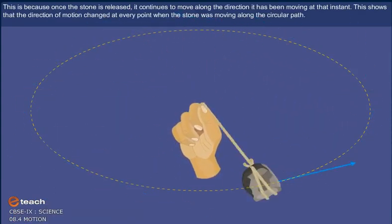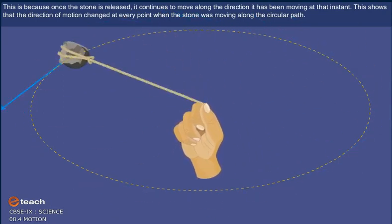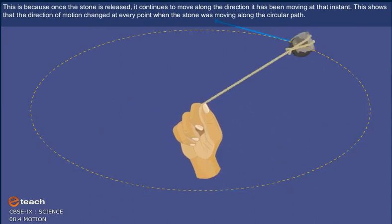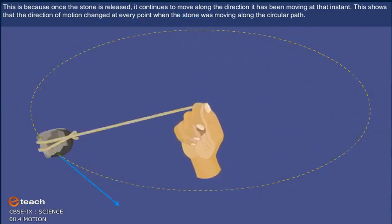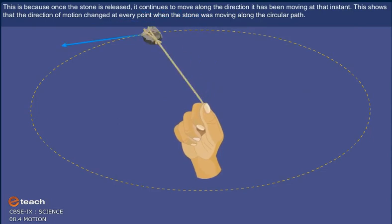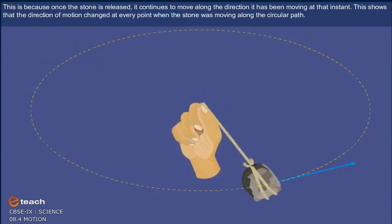This is because, once the stone is released, it continues to move along the direction it has been moving at that instant. This shows that the direction of motion changed at every point when the stone was moving along the circular path.